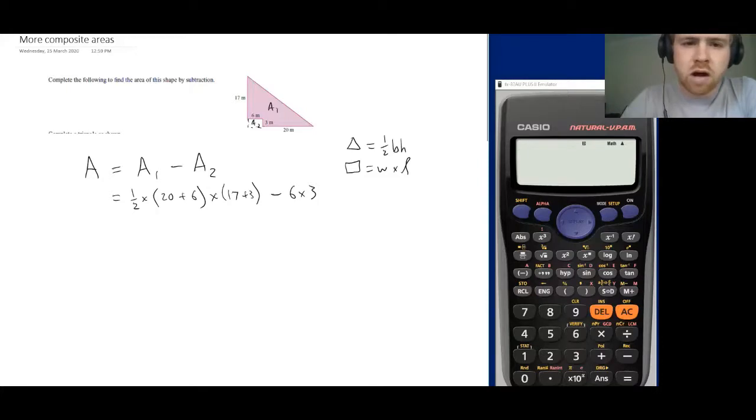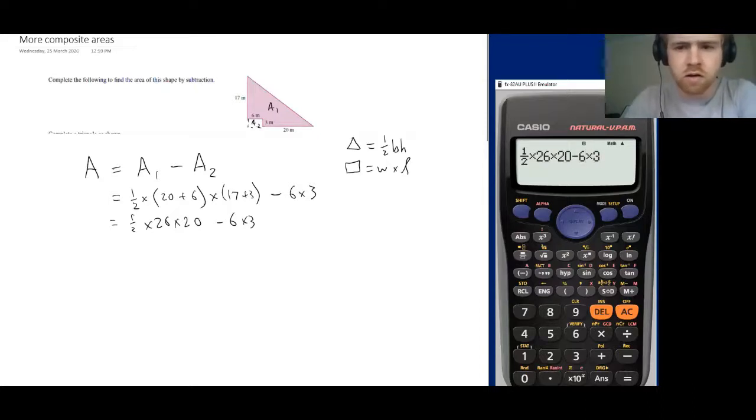Now I can simplify this. It's going to be half times 26 times 20 minus 6 times 3. At this stage we can use our calculator. Make sure that what you've put in your calculator is the same as what you've written on the page. We have our area here: 242 meters squared is our final answer. Set up the question first, substitute your values, then simplify to get your final area.